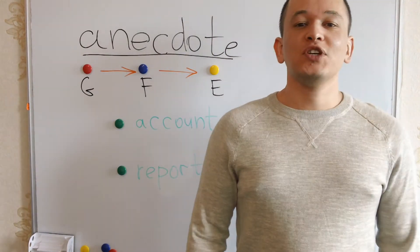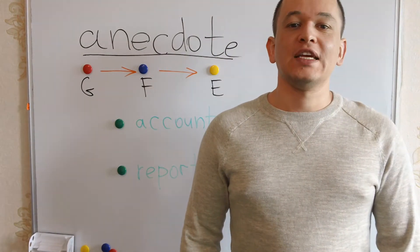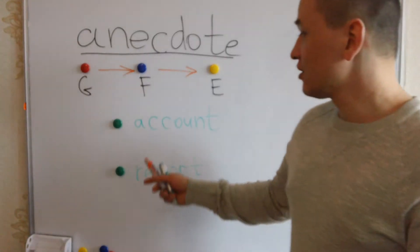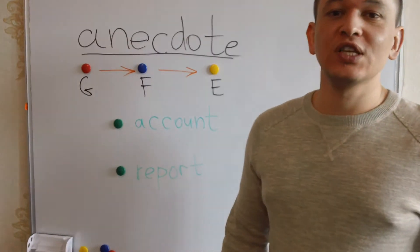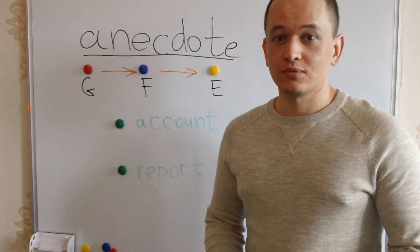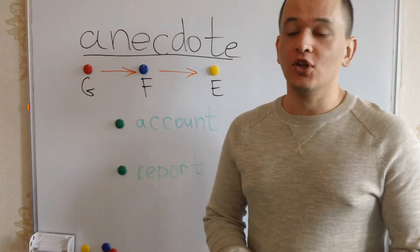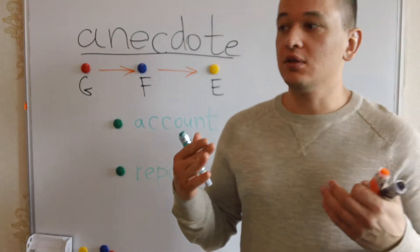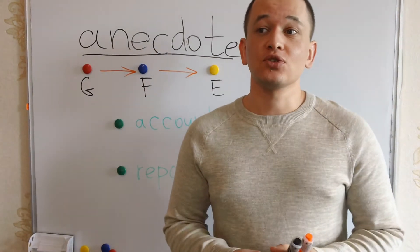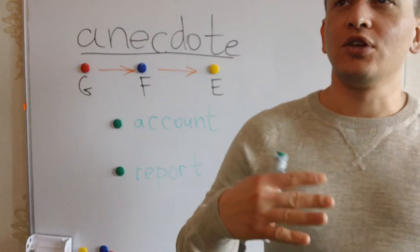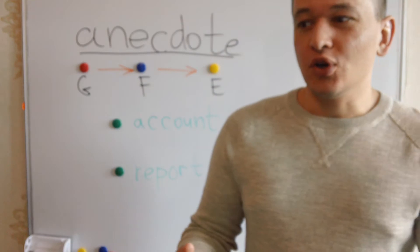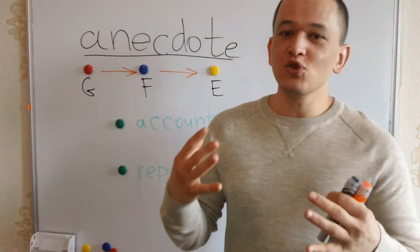I want to explain the word 'anecdote' to you. Synonyms include: account, report, or a short amusing story. The origin of the word goes back to the 6th century, when it appeared in the publishing of a Greek author describing the court gossip of Emperor Justinian — a different kind of amusing story.